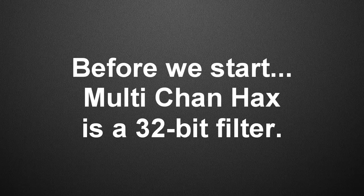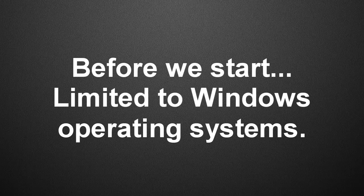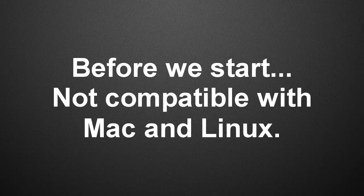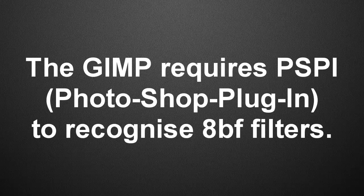Before we can get started, there are a few things to mention. Multi-Chan Hacks is a 32-bit Photoshop filter, so it won't be available from the Filters menu if you run a 64-bit executable of Photoshop. It's also limited to Windows, so Mac and Linux users are out of the loop. The filter works with any program capable of loading the APF filter format, so a handful of programs other than Photoshop should be able to make good use of it — PaintShop Pro is one of them, and Gimp can too, with the help of PSPI, which is a Gimp plugin that runs third-party Photoshop filters.